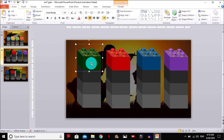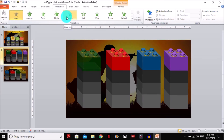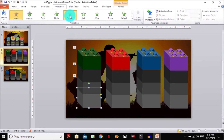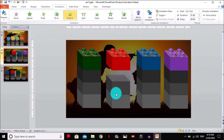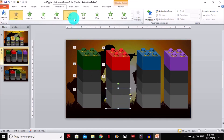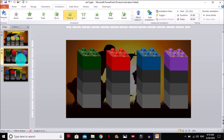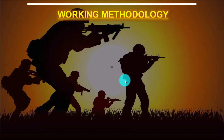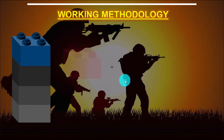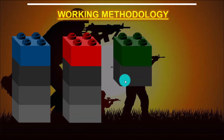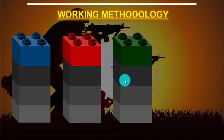Now go to Animation and select Float In. Apply Float In, Float In, Float In, Float In — add the same Float In animation on all blocks. After doing this simple method you will see it works beautifully. You can see how beautifully it can transform your boring slides. If you like this animation, please subscribe and like my channel. Thank you very much.